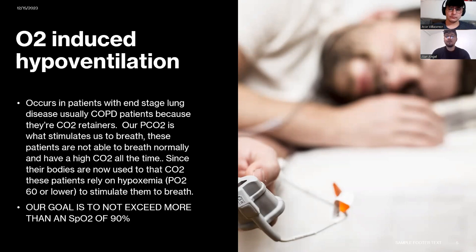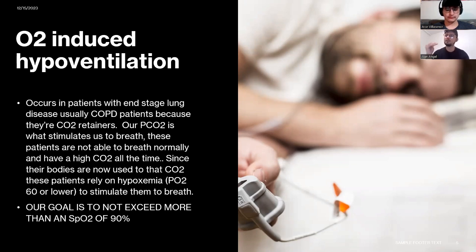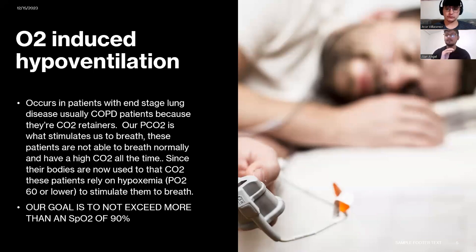COPD patients rely on hypoxemia — low levels of O2 — as their drive to breathe. Our normal SpO2 should be between 94 to 97%, but for these patients their threshold should be lower. If we give them higher FiO2 than their body's threshold, they will basically stop breathing. Their SpO2 goal should be no more than 90%; 91% is already too high. Since they are always retaining CO2, we really have to monitor their oxygenation carefully and not give them too much oxygen.